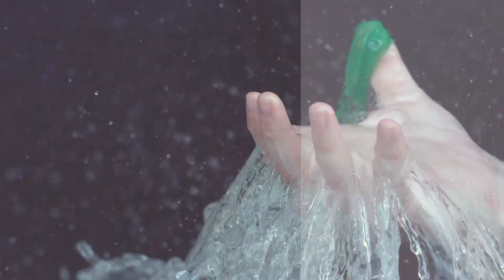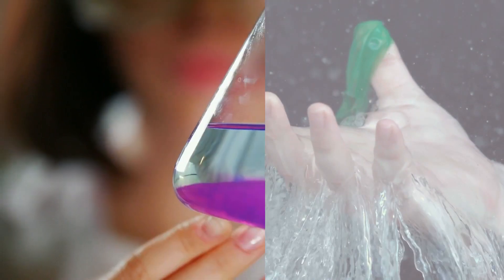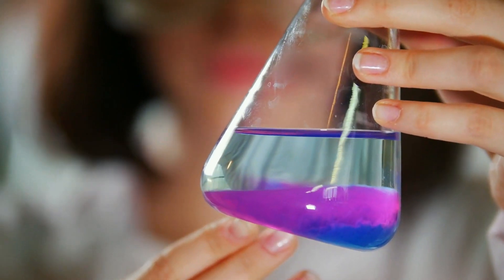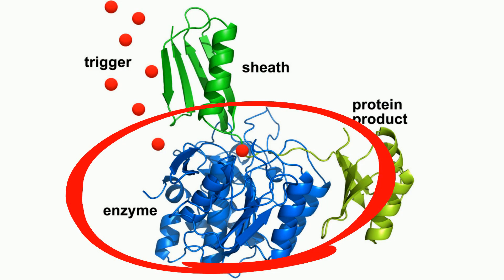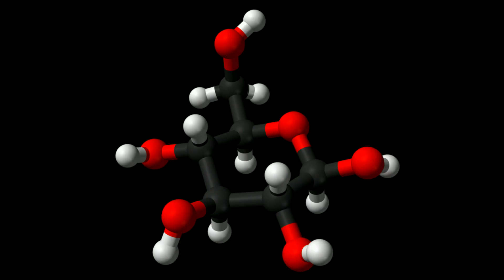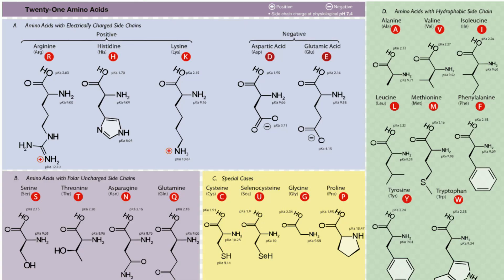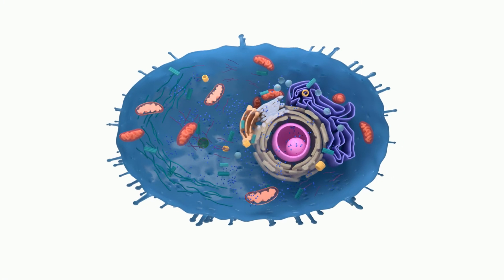In addition, there are important molecules dissolved in the cytosol. You'll find enzymes, sugars, fatty acids, and amino acids that are used to keep the cell working. Waste products are also dissolved before they are taken in by the vacuoles.